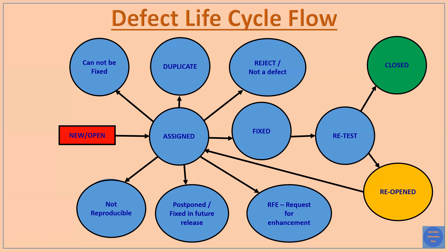The third scenario is when the developer analyzes the bug and finds that it is not actually a bug or defect. In that case, the developer simply rejects it. The reason could be a configuration issue — for example, the tester forgot to configure some setting while testing a particular test case, causing a false bug to be found. The developer mentions the reason and marks the bug as 'Not a Defect'.